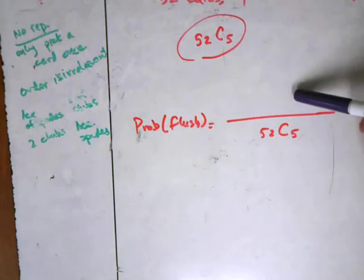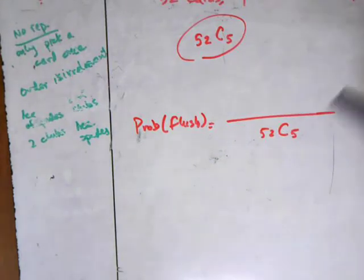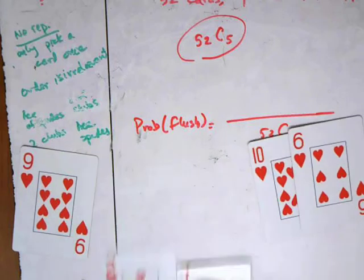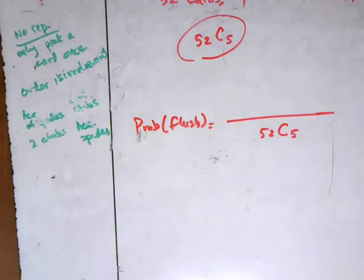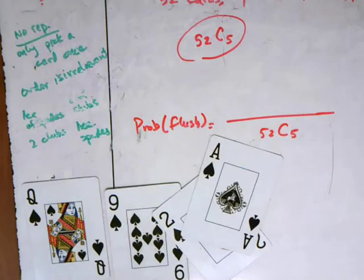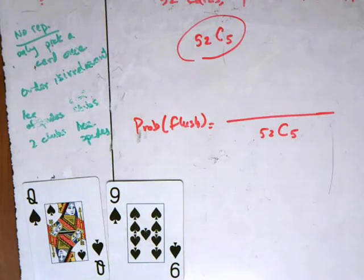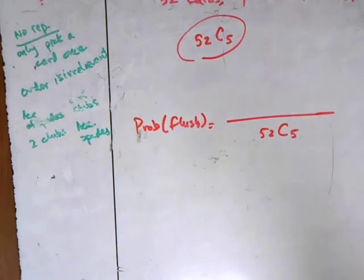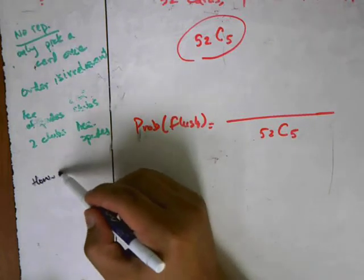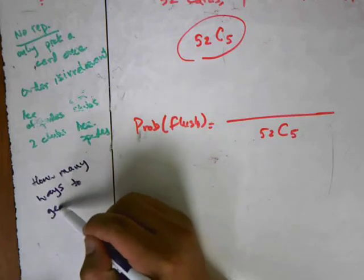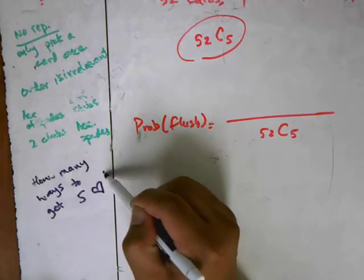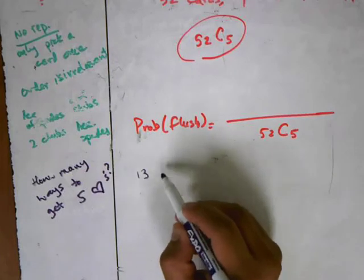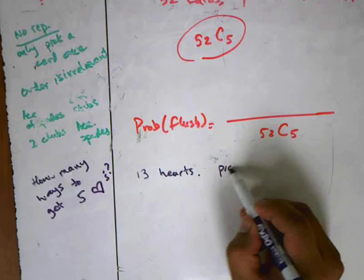Now ask: how many ways are there to get a flush? You could have five hearts — that's a flush. Or a different set of five hearts — also a flush. Or five spades — also a flush. So let's solve the simpler problem: how many ways to get five hearts? There are 13 hearts in the deck, and we need to pick five of them.